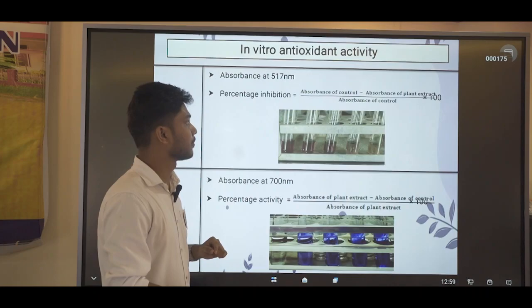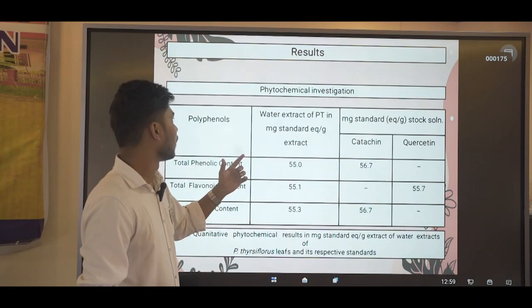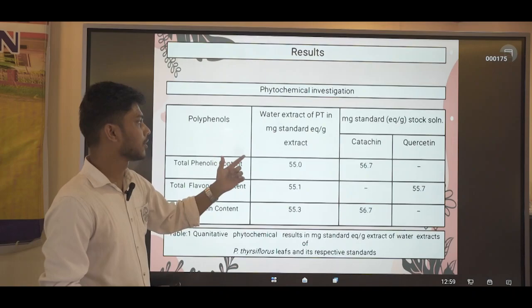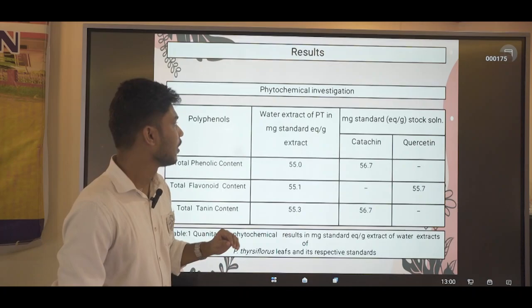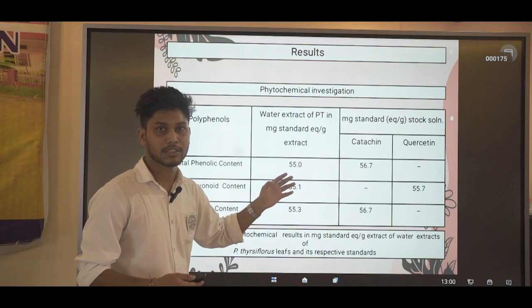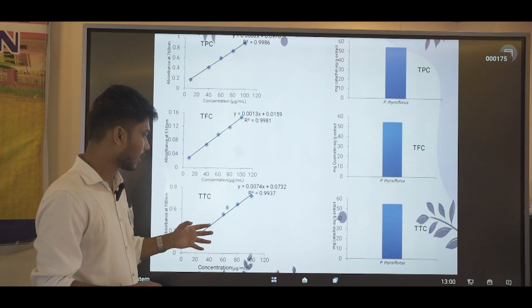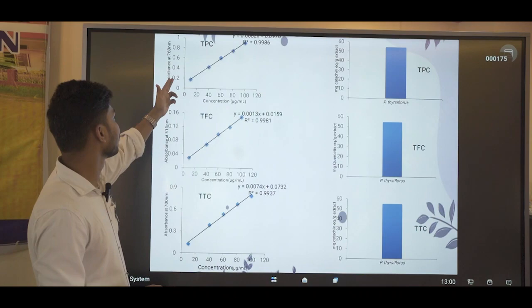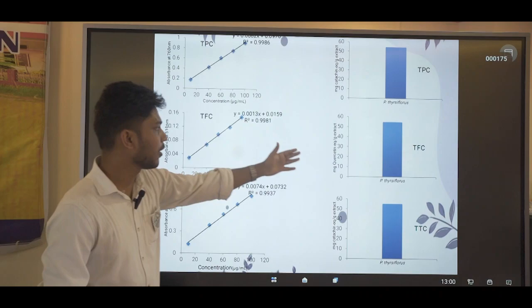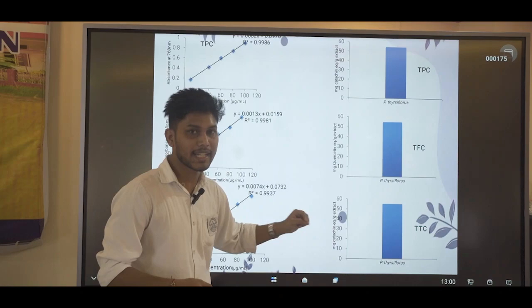These are the data obtained in our study. For total phenolic content, our plant sample has 55 mg standard equivalent per gram of extract. For total flavonoid content, we got 55.1 mg standard equivalent per gram of extract, and for total tannin content, 55.3 mg. The graphs show that as the concentration of the sample increases, the absorbance data increases in a linear manner. Bar graphs show the amounts of phenols, flavonoids, and tannins in our plant sample.